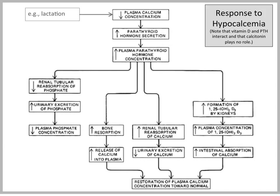As an exercise, let's look at what happens when the body is challenged by a great need for calcium, such as during lactation in a dairy cow. If there is a reduction of plasma calcium, the first response will be an elevation of PTH. That elevated PTH will have its effect in three places. Starting on the left: it will reduce renal tubular reabsorption of phosphate, increase urinary excretion of phosphate, and decrease the phosphate concentration. That's what PTH does — it decreases phosphate.